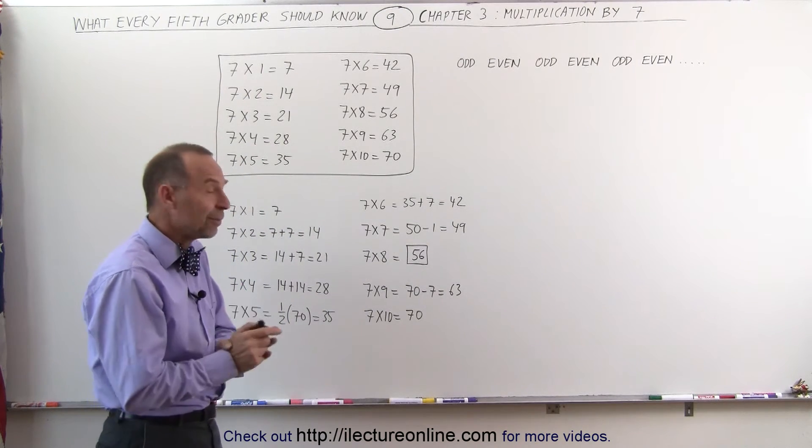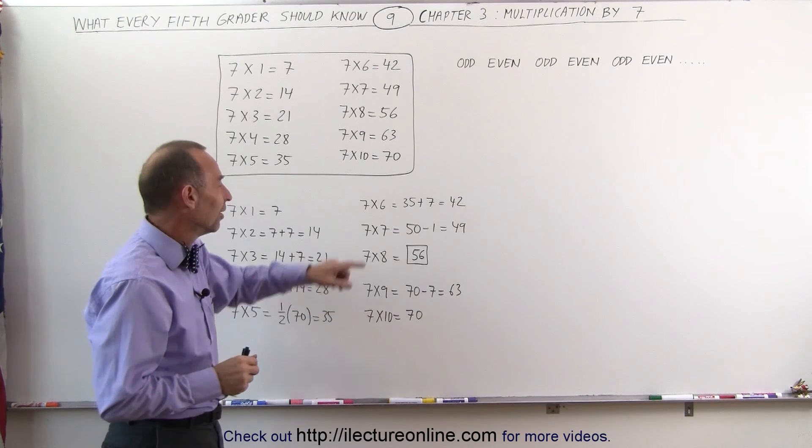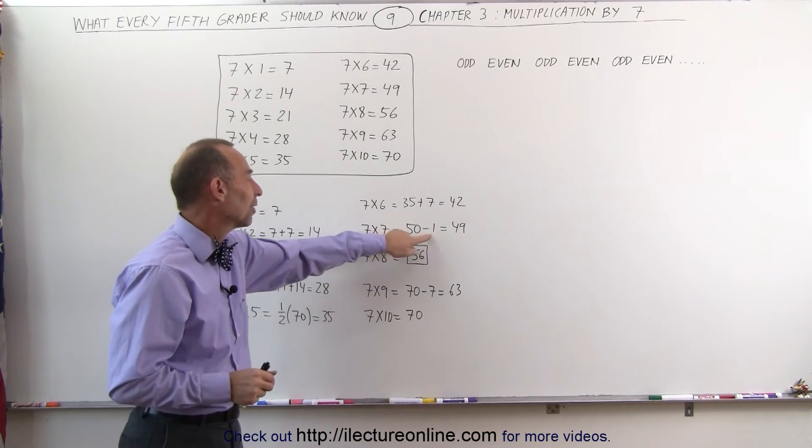The way I used to remember 7 times 7, I knew that it was always 50 minus 1. 7 times 7 is 50 minus 1, which is 49.